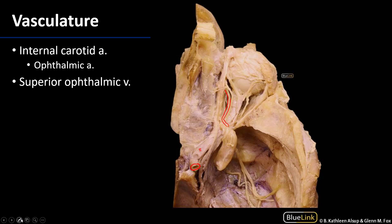The ophthalmic veins, of which there are two, drain the orbit of blood. Here we can see the superior ophthalmic vein, which drains the superior aspects of the orbit and the eye. It can anastomose with branches of the facial veins, and can be a route for infections to travel back to the cavernous sinus. That superior ophthalmic vein travels through the superior orbital fissure on its way back to the cavernous sinus, which is located deep here, just lateral to the sella turcica.